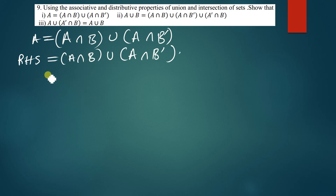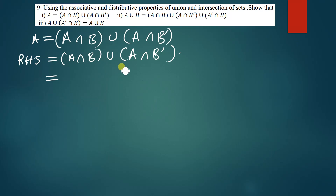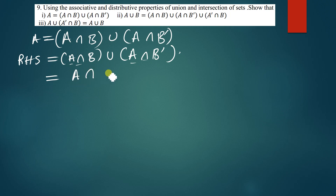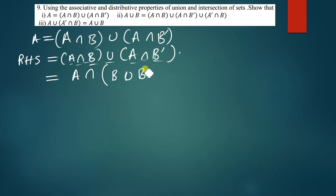I'm going to use the associative law to simplify. This expression is already in a distributed format, so I'll look at the common parts. I can see there's A and A, and also intersection and intersection. I'll write the common part outside: A intersection, then open brackets. The remaining parts are B and B complement, so inside the brackets we have B union B complement.